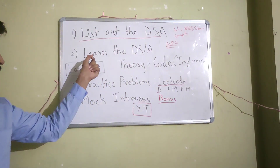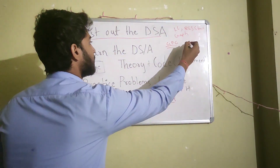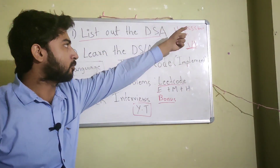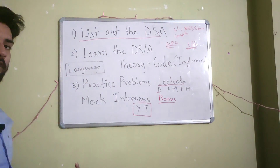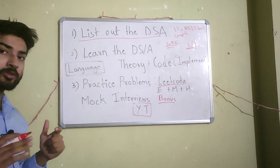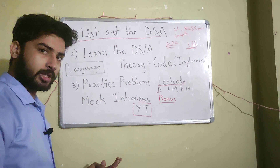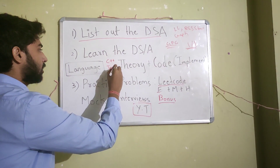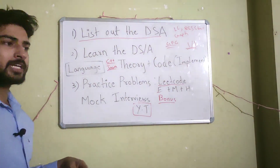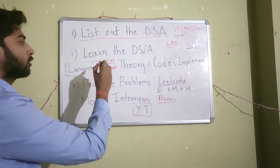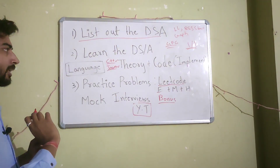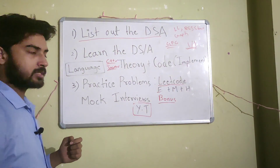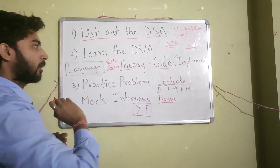Once you have the list of DSAs, you are going to learn them one by one — every data structure and algorithm on the list sequentially. For example, start from linked list, then go to BST, then the next data structure. First, you need to decide on the programming language you are going to code in. I suggest either C++ or Java. You can take any other language like Python, but I strongly suggest C++ or Java.